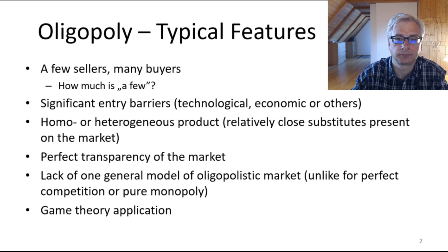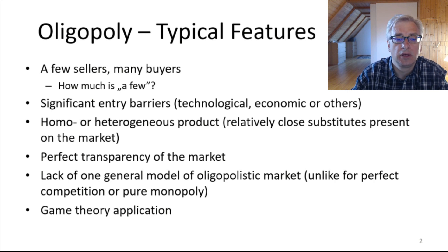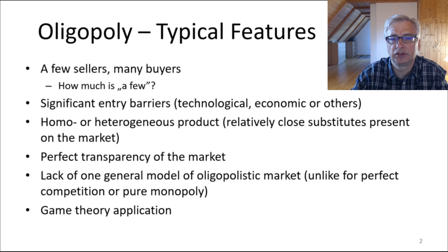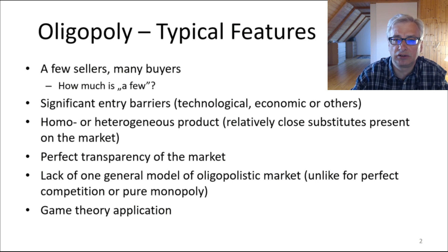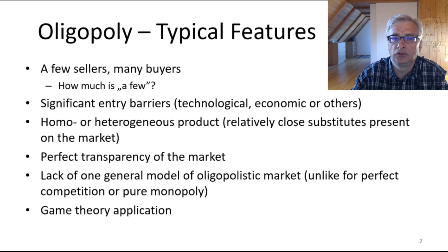This is different from a perfect competition market, where a single business was so small that no one would realize it's there. Why do we have just a few businesses in such a market? This is thanks to significant entry barriers. In perfect competition we had virtually no entry and exit barriers; in pure monopoly those barriers were very strong — just one firm was able to overcome them. In oligopolistic market, barriers are very significant, therefore there are just a few businesses that are able to cope with them.